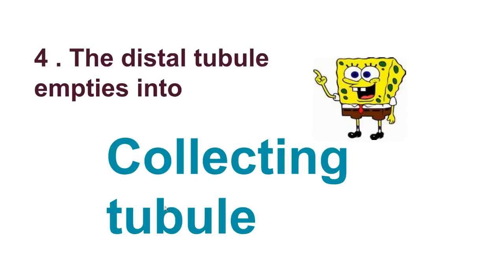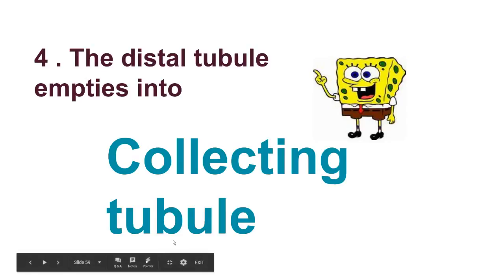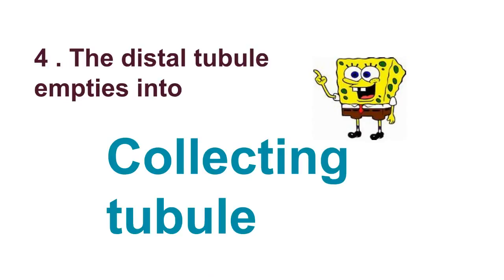The distal tubule empties into the collecting tubule. Many nephrons share the same collecting tubule, and the collecting tubules open into the renal pelvis.